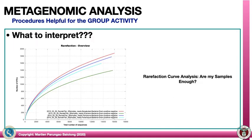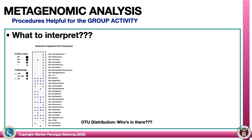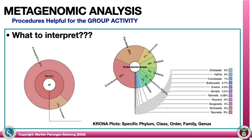What would you be interpreting? You can interpret the rarefaction curve, which tells you whether your samples are enough. If the curve is plateauing, that means your samples are enough; but if it is still increasing, you need more samples. Another thing to interpret will be your OTU distribution — who is in there — which will represent your taxonomic fingerprint in terms of OTUs, sequences, and numbers.